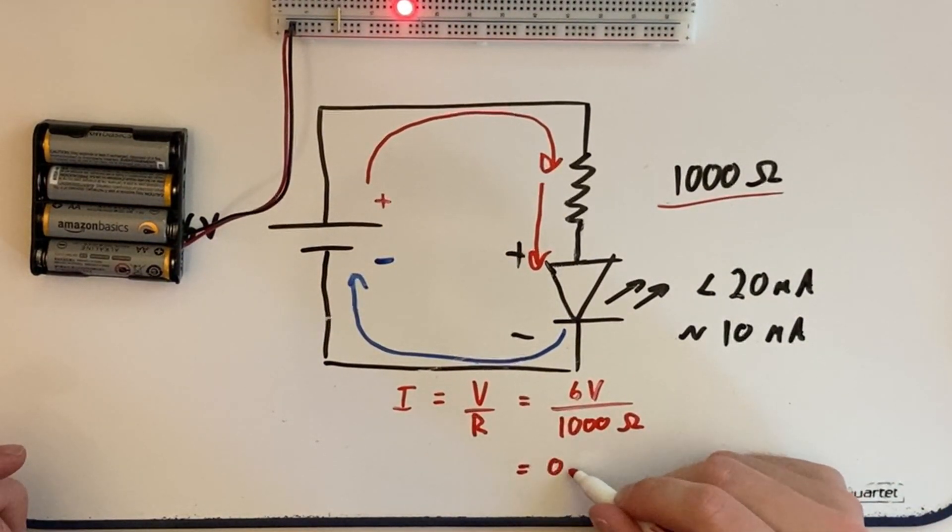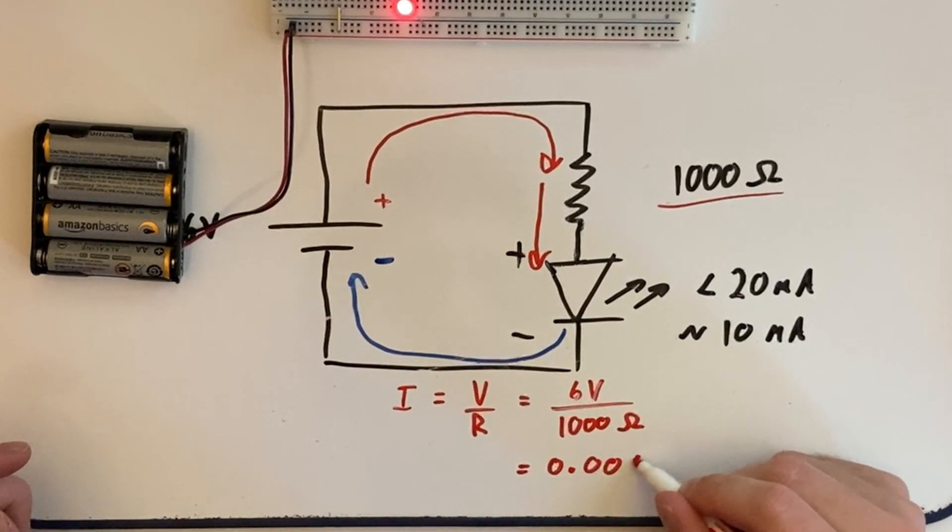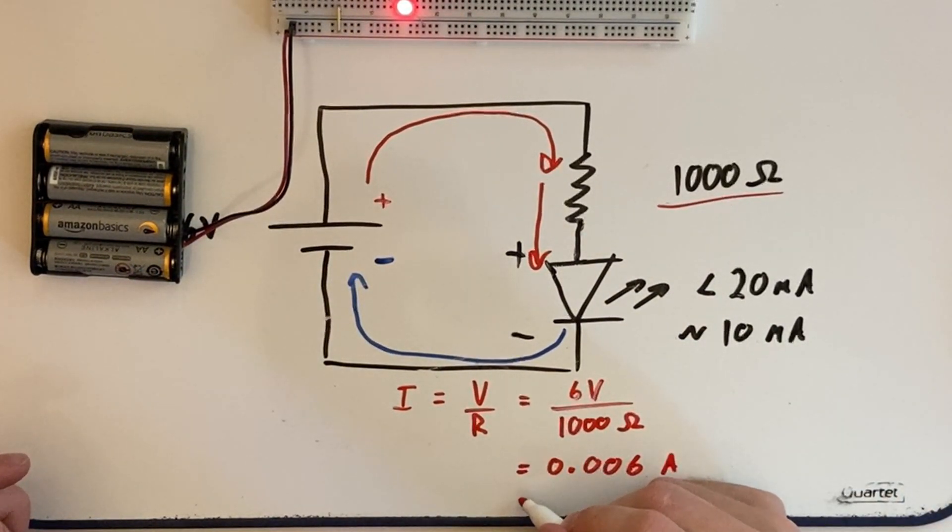So there you have it folks, that is how you do some basic circuit calculations and how to light up an LED using a six volt battery and a 1000 ohm resistor.